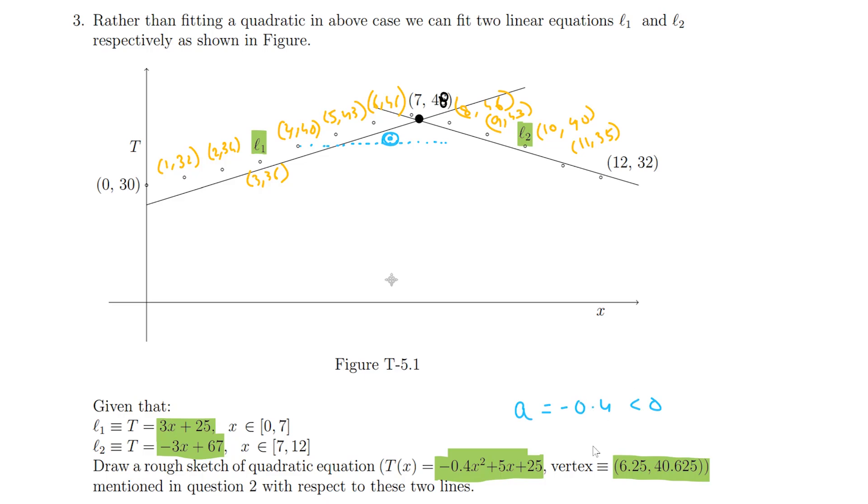Let us look at the two points that we know for sure. At x equals 0, this parabola is going to give us 25. The quadratic equation is going to give us 25, which is definitely below.